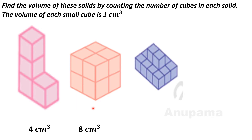Now let us see another shape. Counting: one, two, three, four — and here one, two, three. That means there are a total of 12 cubes on the first level, and two cubes are placed on top of these 12 cubes. So the total is 14 centimeter cube, which is the volume of this shape.